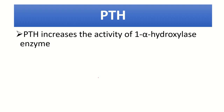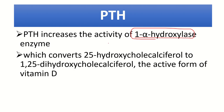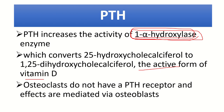Parathyroid hormone increases the activity of alpha-1 hydroxylase in the proximal convoluted tubule, converting 25-hydroxycholecalciferol to 1,25-dihydroxycholecalciferol, which is the active form of vitamin D. There is also another hydroxylase that acts on bone. This ultimately drives intestinal calcium absorption.